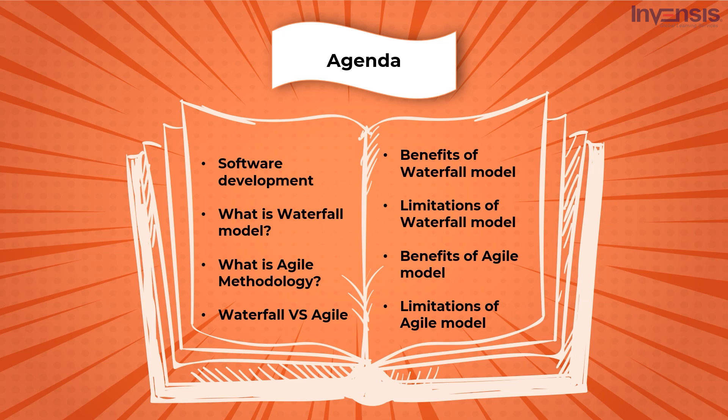As you can see on the screen, we'll start by learning about the history of software development. Following that, the methodologies will be defined. Then we'll go over the variations between the Waterfall and Agile models, examine the advantages and disadvantages of each, address implementation issues, and finally wrap up by addressing solutions to the problems that arise with both models.